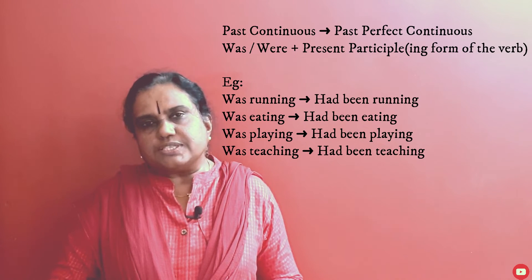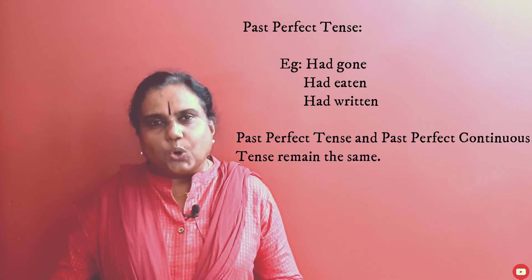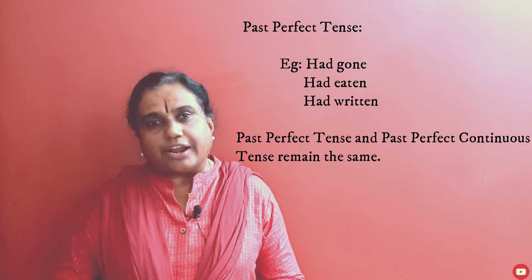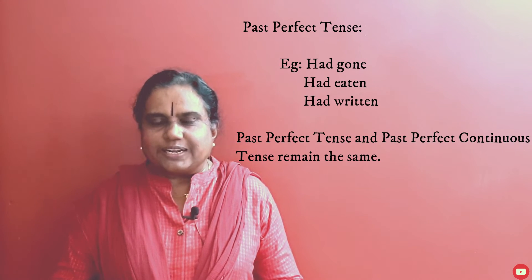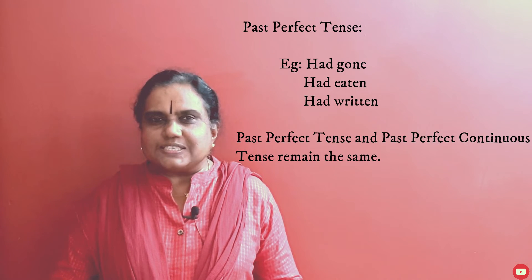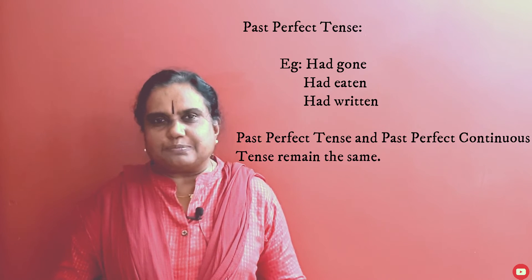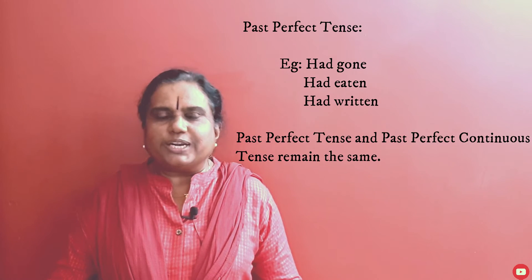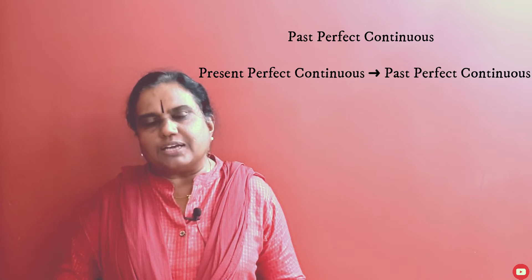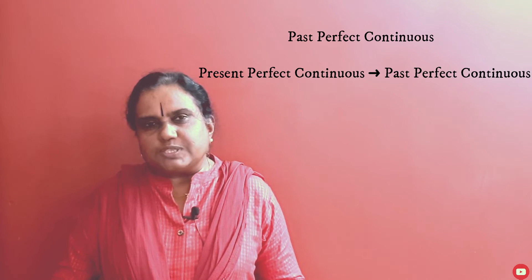Past continuous tense — 'was/were plus present participle (ing form)' — becomes past perfect continuous tense. For example: 'was teaching' becomes 'had been teaching,' 'was eating' becomes 'had been eating.' Past perfect tense — 'had gone,' 'had eaten,' 'had written' — remains the same in indirect speech. It does not change.